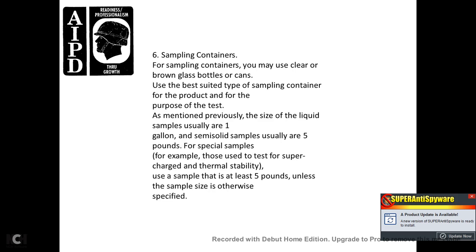Weighted bottle: a glass cylinder sampler consisting of a glass bottle with a square weighted bottle holder, attached to a drop cord with a ring and stop. Weighted bottle samplers are used in the same manner and for the same purposes as weighted beakers, with the exception that the weighted bottle has a wide mouth and can be used with heavy or light products. Use the weighted bottle for all vapor pressure, oxidation stability, and mobility samples. Sample containers: use clear or brown glass bottles or cans, selecting the type best suited to the product and test purpose. The size of liquid samples is usually one gallon; for semi-solid samples, use five pounds. For special samples — such as those for supercharged or thermal stability tests — use at least five pounds unless otherwise specified.